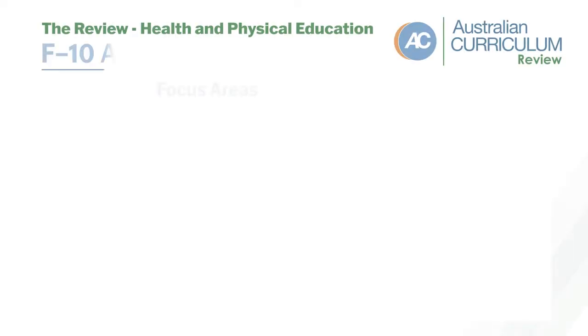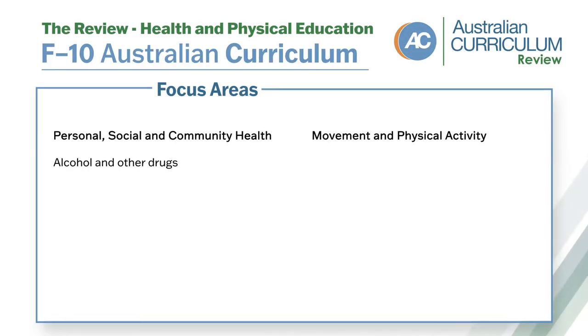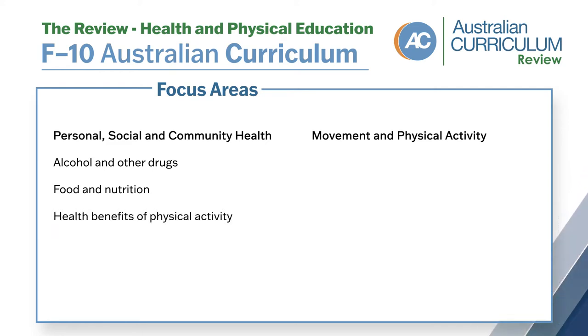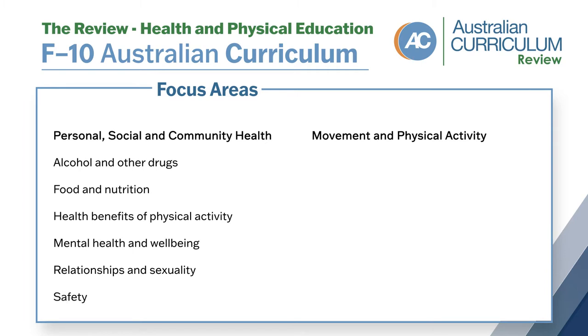In health and physical education we've got 12 focus areas. In the health strand we look at alcohol and other drugs, food and nutrition, health benefits of physical activity, mental health and well-being, relationships and sexuality and safety.